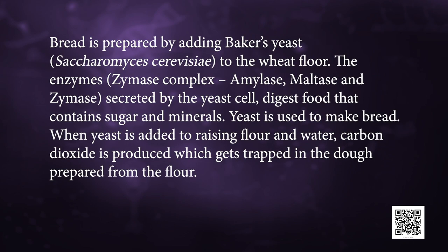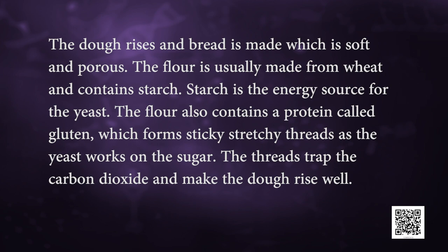Next is bread. It is used in the baking industry. Bread is prepared by adding baker's yeast, Saccharomyces cerevisiae, to wheat flour. The enzyme zymase complex, including amylase, maltase and zymase, is secreted by the yeast cell to digest food containing sugars and minerals. When yeast is added to raising flour and water, carbon dioxide is produced which gets trapped in the dough. The dough rises and bread is made which is soft and porous. The flour is usually made from wheat and contains starch, which is the energy source for the yeast. The flour also contains a protein called gluten which forms sticky stretchy threads as the yeast works on the sugar. The threads trap the carbon dioxide and make the dough rise well.